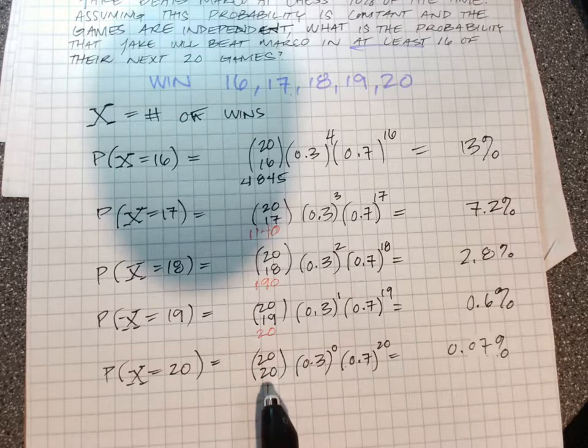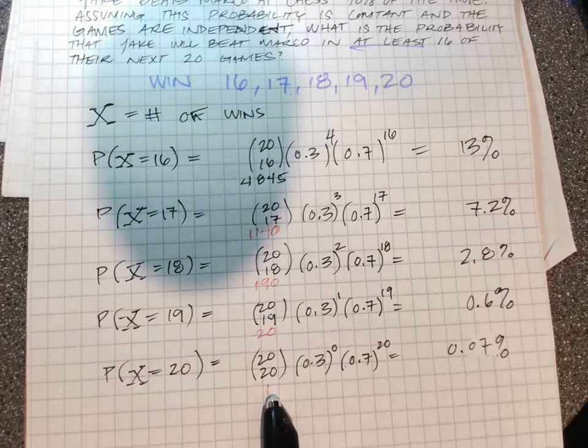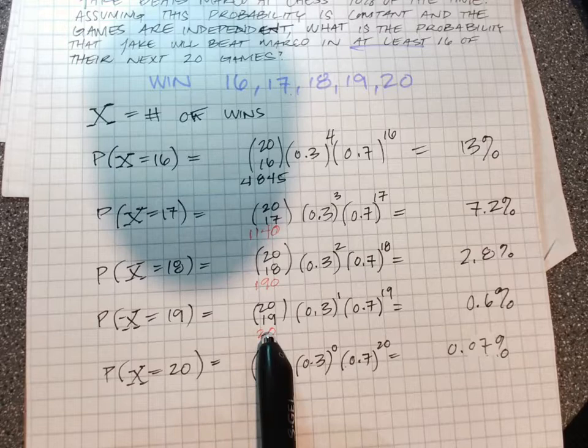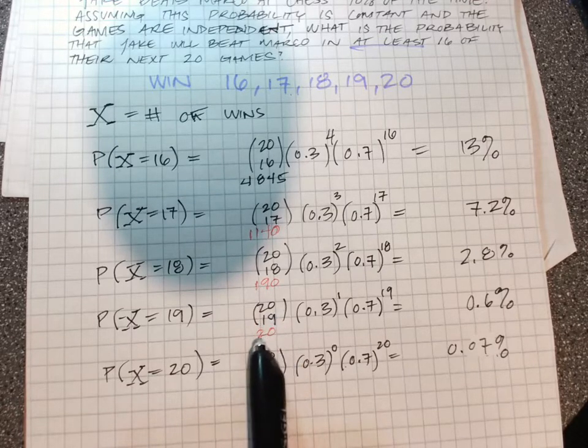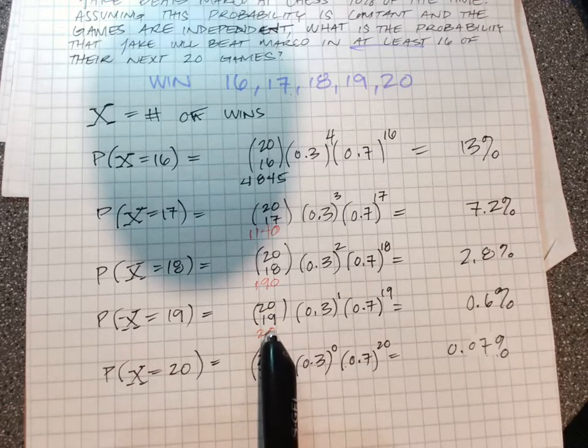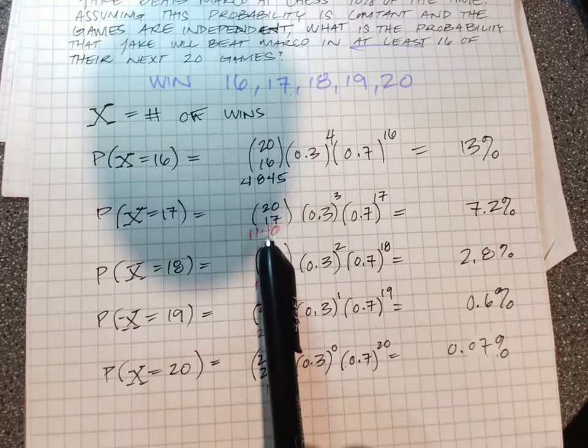20 choose 20, there's only one way to win all 20 games. It's straight wins all the way across the board. 20 choose 19 wins means there's 20 ways that could happen, and that's what these red numbers mean here. I calculated the choose notation.